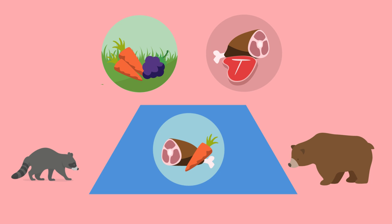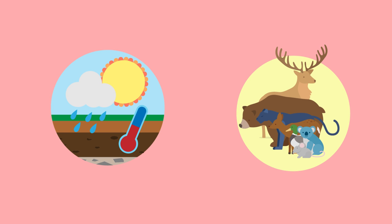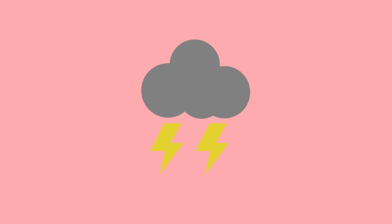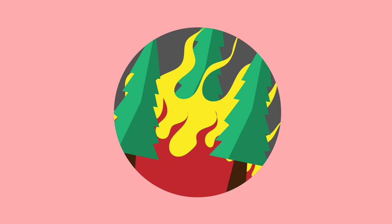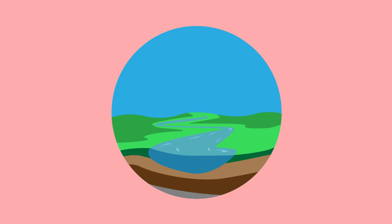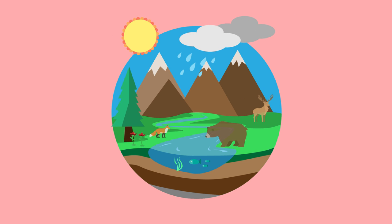Interactions within an ecosystem can also occur between abiotic and biotic components. One great example of this is when weather patterns like thunderstorms cause forest fires and alter the habitats of the organisms living within the forest. While not always the case, interactions between ecosystem components are often great catalysts for evolution. But that's a topic for another video!